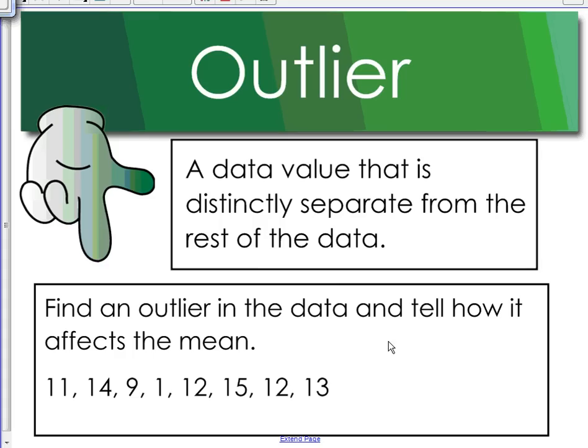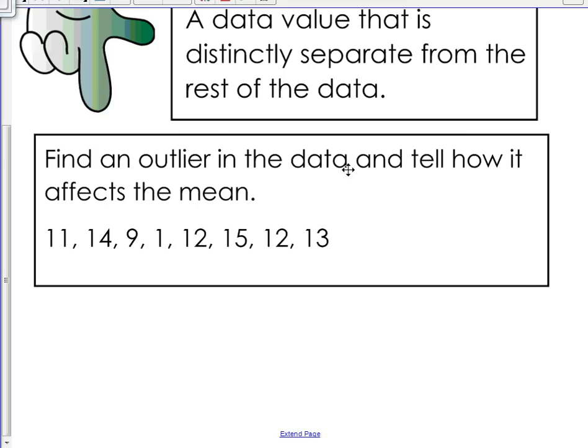Alright, so looking at our example here, we have find an outlier in the data and tell how it affects the mean. Now, if you remember, the mean is like the average. You add all of these numbers up, and then you divide it by the number of data you have.